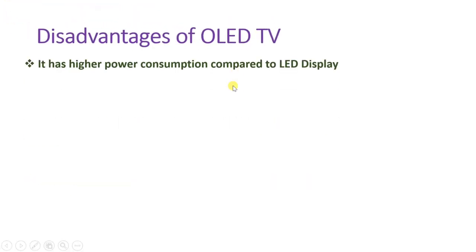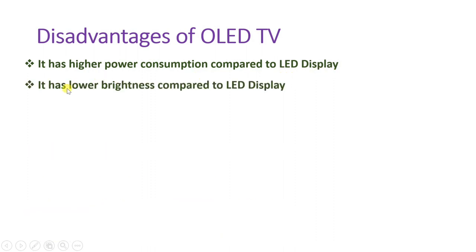The disadvantages: OLED consumes a bit higher power compared to LED display — not very high, but about 10 to 15 percent more power consumption compared to LED. It also has lower brightness compared to LED display.